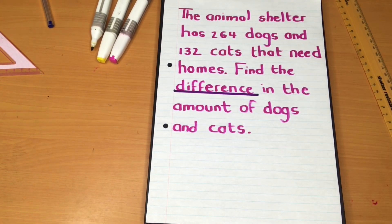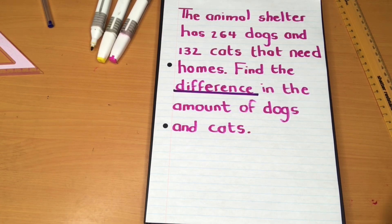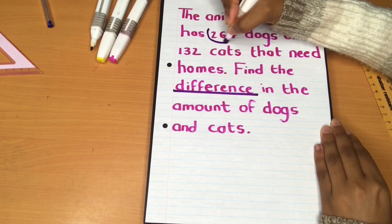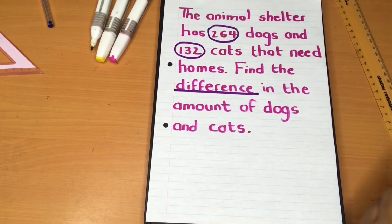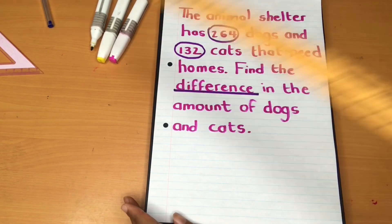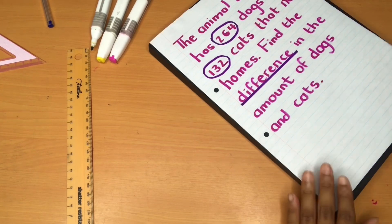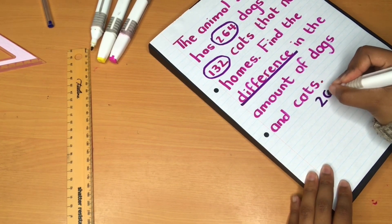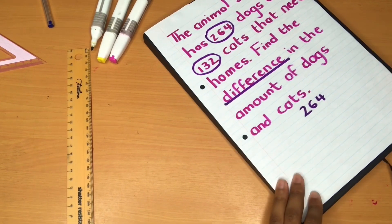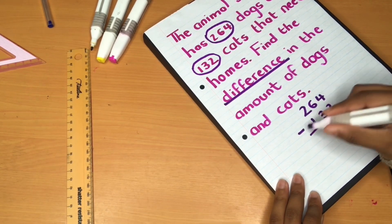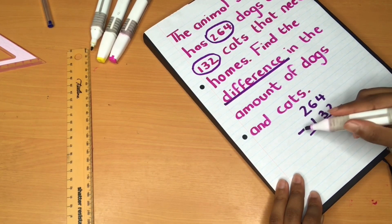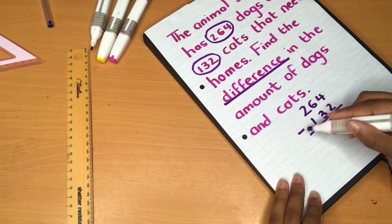The word 'difference' shows us that this is a subtraction word problem. Now we need to identify the numbers that will make up our sum, and these numbers are 264 and 132. Our sum will then be 264 minus 132. 4 minus 2 equals 2, 6 minus 3 equals 3.